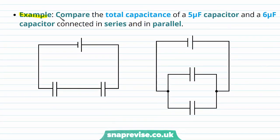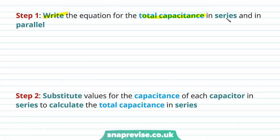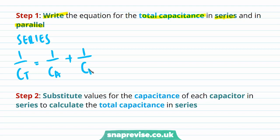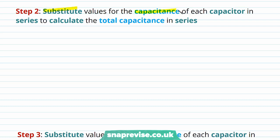For example, compare the total capacitance of a 5 µF capacitor and a 6 µF capacitor connected in series and in parallel. So here are our two capacitors, one with capacitance 5 µF and the other with 6 µF. Our first step is to write the equation for the total capacitance in series and in parallel. So in series, 1 divided by the total capacitance is equal to 1/Ca plus 1/Cb. And for capacitors connected in parallel, the total capacitance is equal to the sum of the individual capacitances. Step 2 is to substitute values for each capacitor in series to calculate the total capacitance in series.